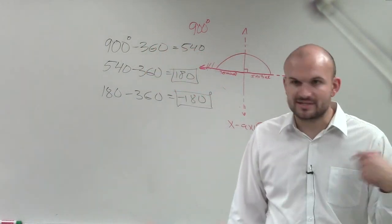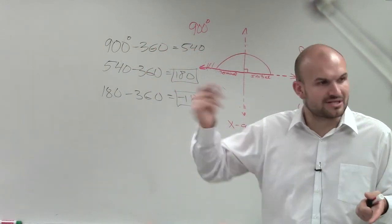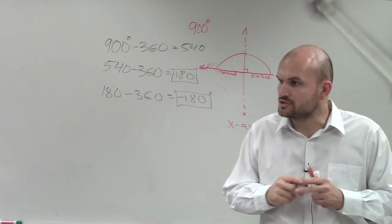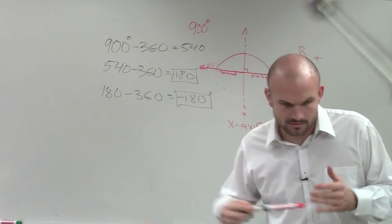If I keep on subtracting 360, I'm just getting larger numbers in the negative direction, right? So I don't want to keep on subtracting. And I've found the two coterminal angles. Does that make sense? OK.